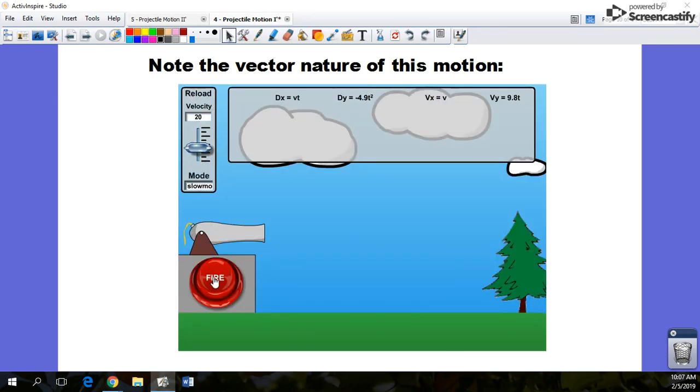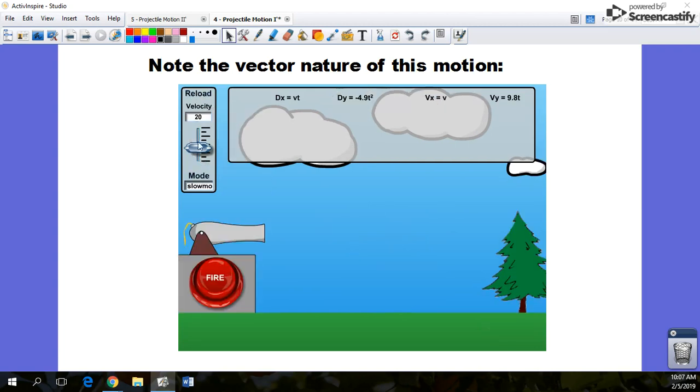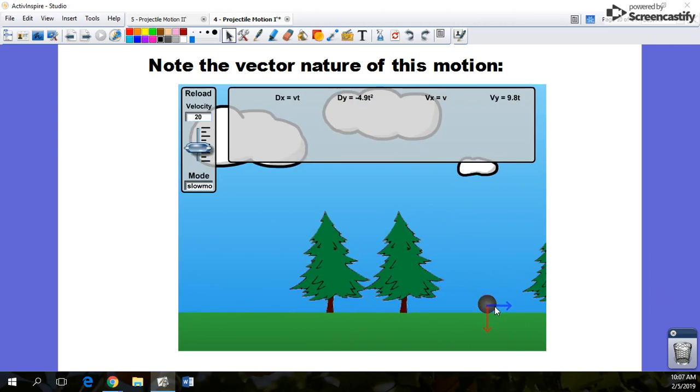Let's watch it a little bit slower. Here's what I want you to look at. Check out those arrows. These are velocity vectors. The thing I want you to notice about these velocity vectors, as that cannonball goes through the air, is that this blue vector never changes in length. It's always the same.